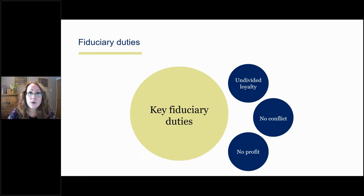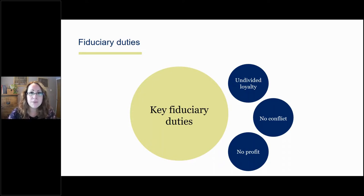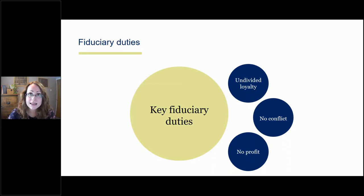The key fiduciary duty we're talking about here is the duty of undivided loyalty, from which derives two principles: the no conflict rule and the no profit rule. I'm not going to go through huge amounts of detail about how these principles came about through case law, but there is a very interesting document published by the Charity Commission called Legal Underpinnings. It's available in the same place you can find CC29, which is the Commission's guidance on conflicts of interest. If you'd like to understand more about the legal reasons for the conflict of interest rules, that's the place to look.